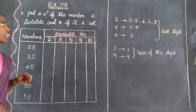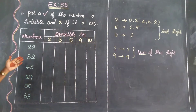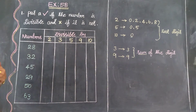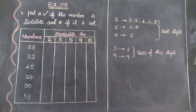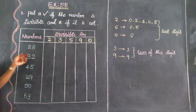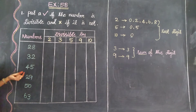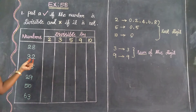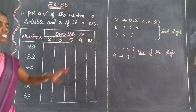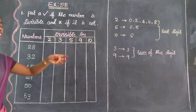Welcome students. This is the exercise for the 5th week. In the previous videos we learned about the divisibility of some numbers. Now the second part — the numbers in the table are 28, 32, 45, 29, 50, 60, and 3. So in each number, always find out which numbers it is divisible by.